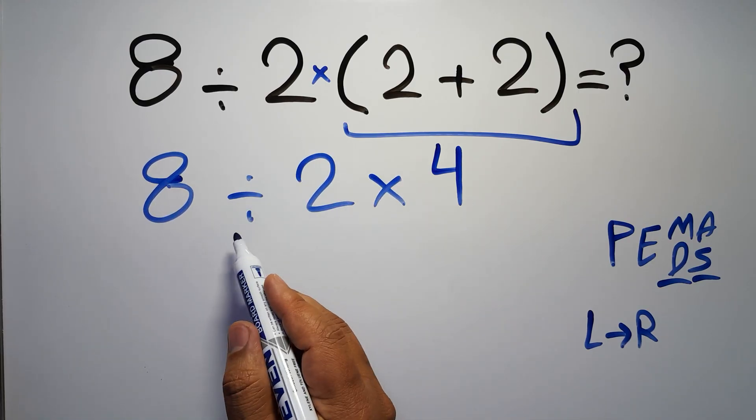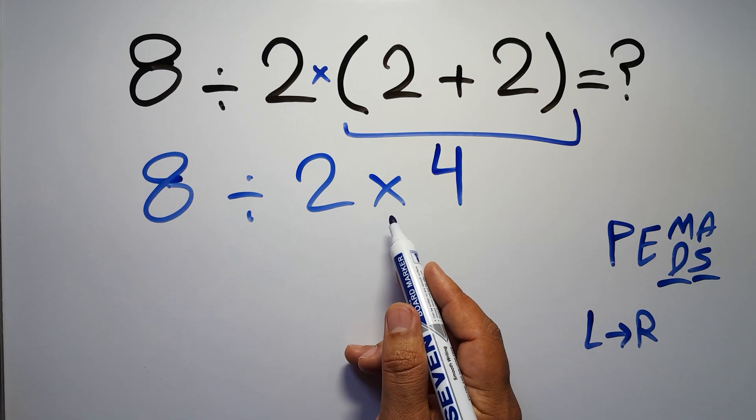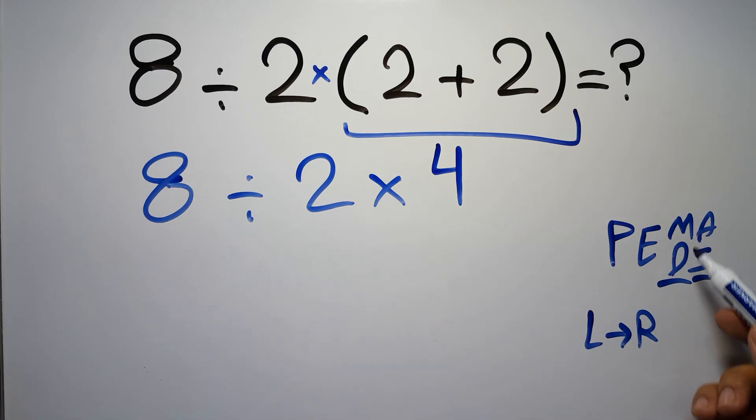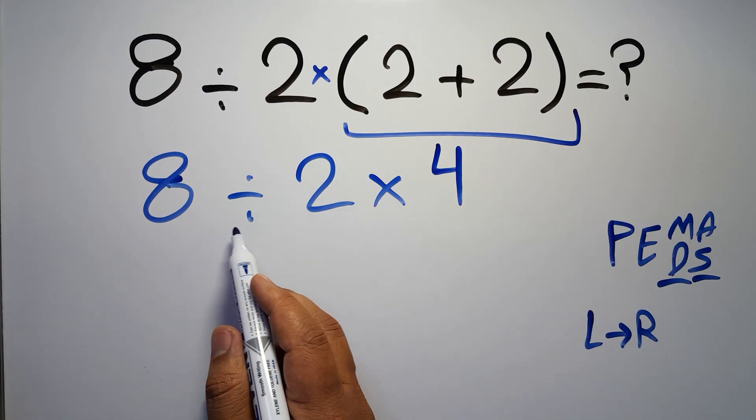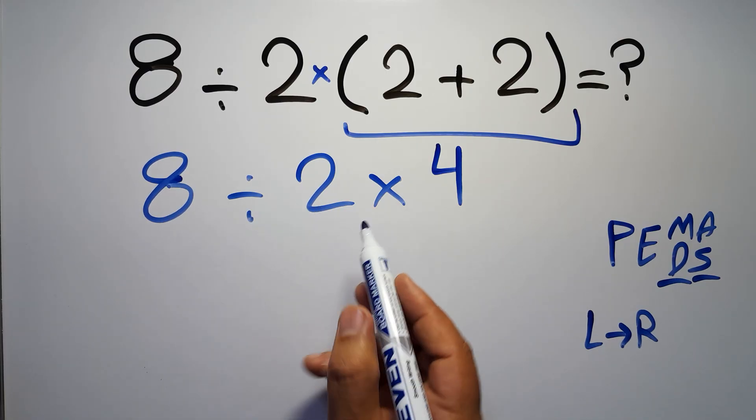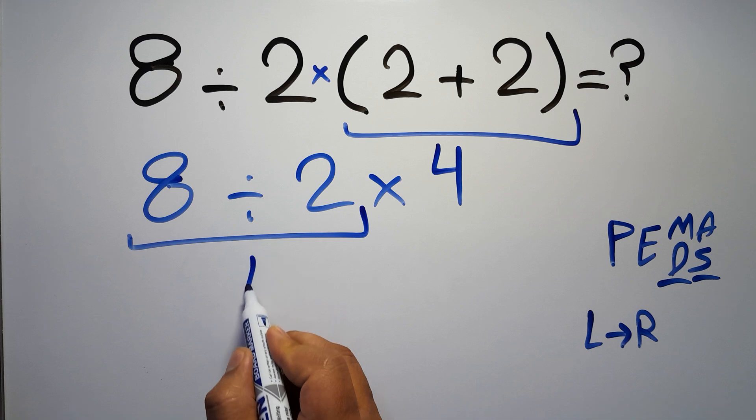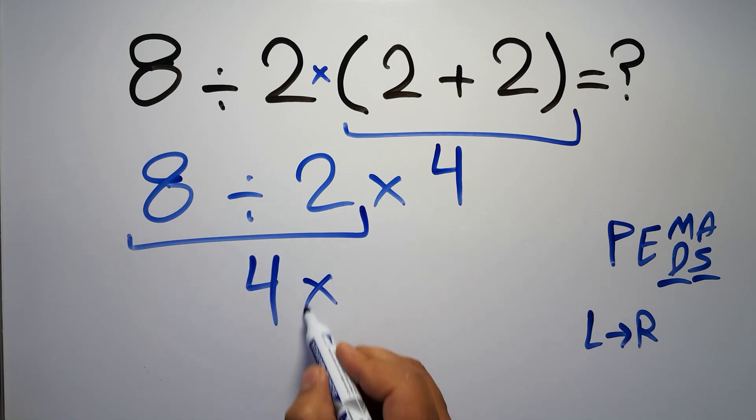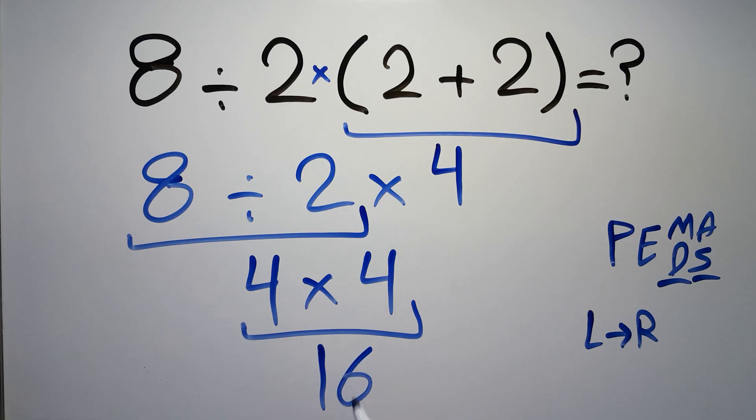Now we have one division and one multiplication. Multiplication and division have equal priority, and we have to work from left to right, so here first we have to do this division. 8 divided by 2 is just 4, so 4 times 4, which equals 16. And this is our final answer to this problem.